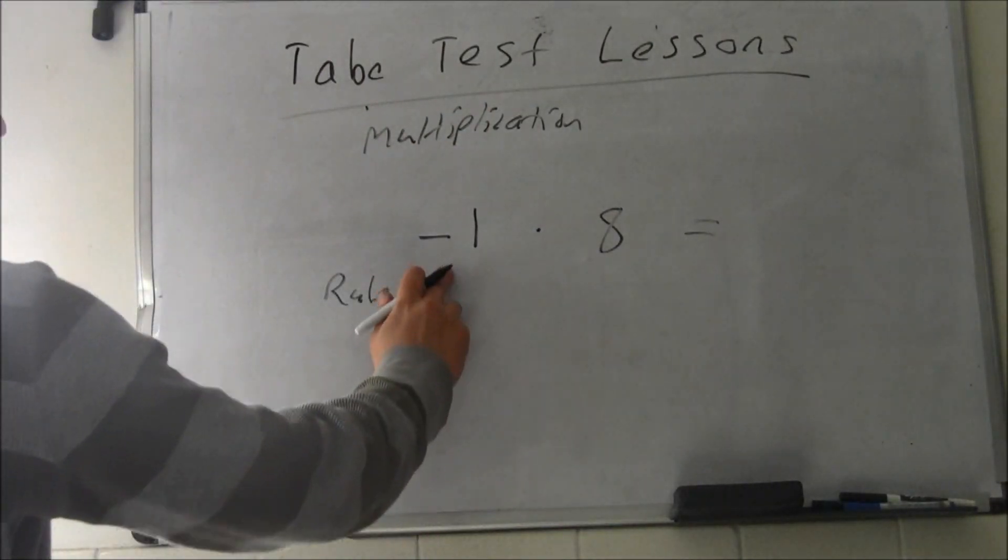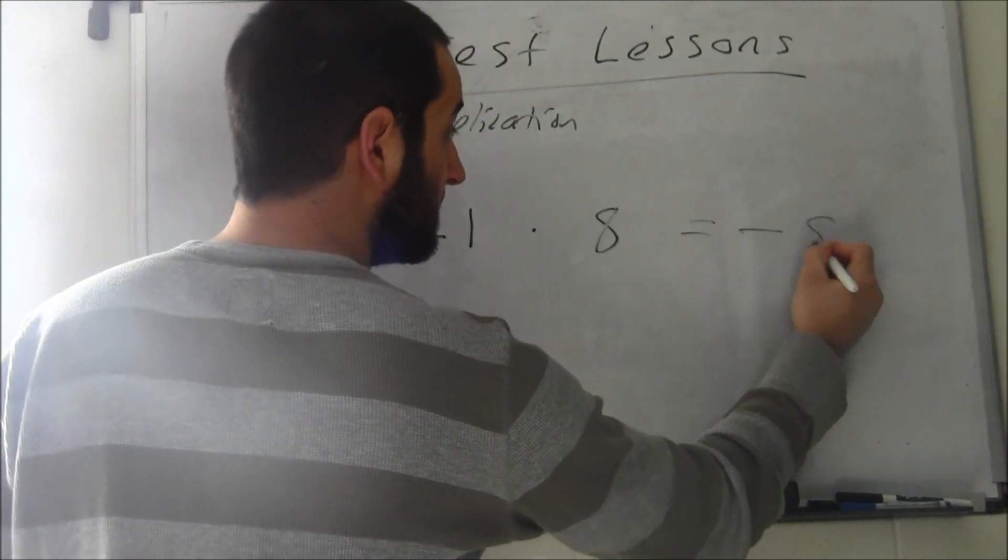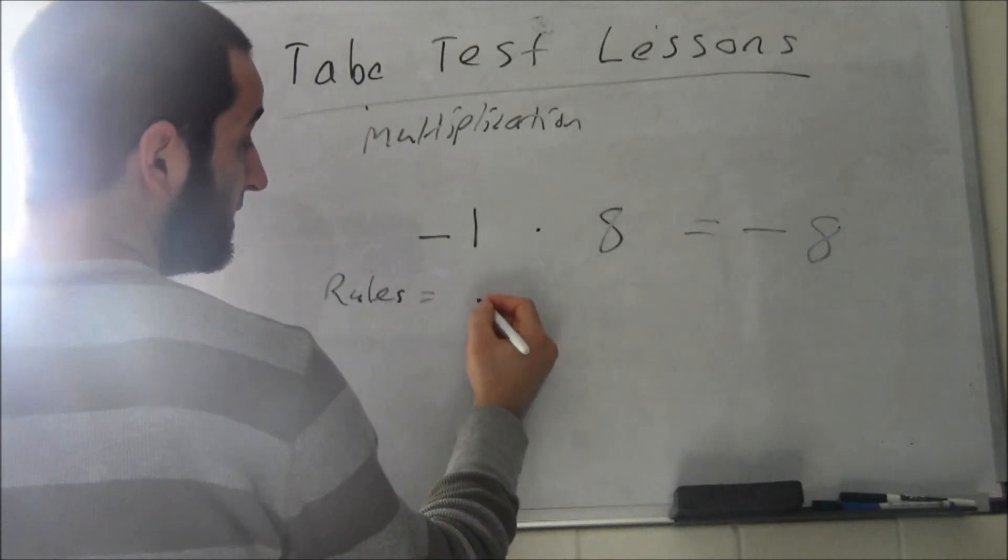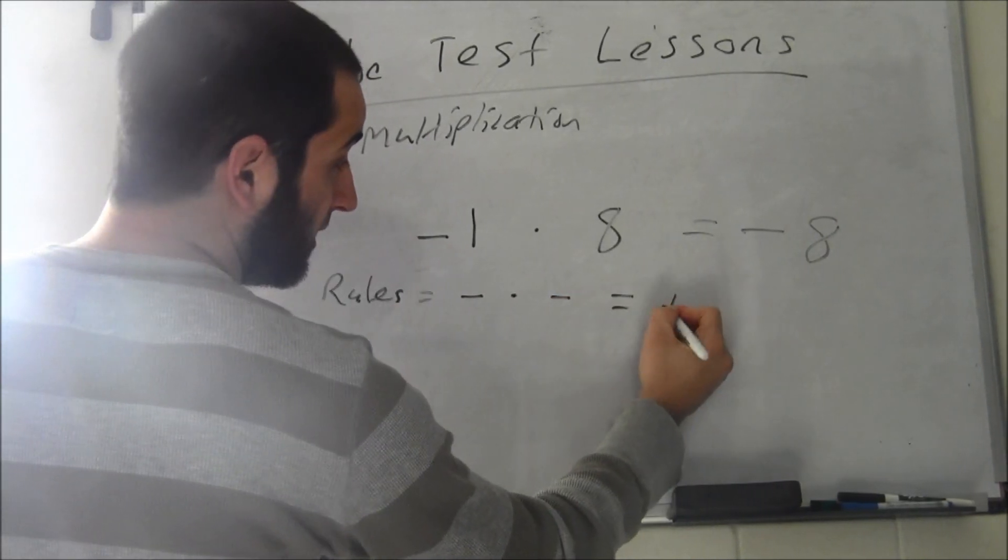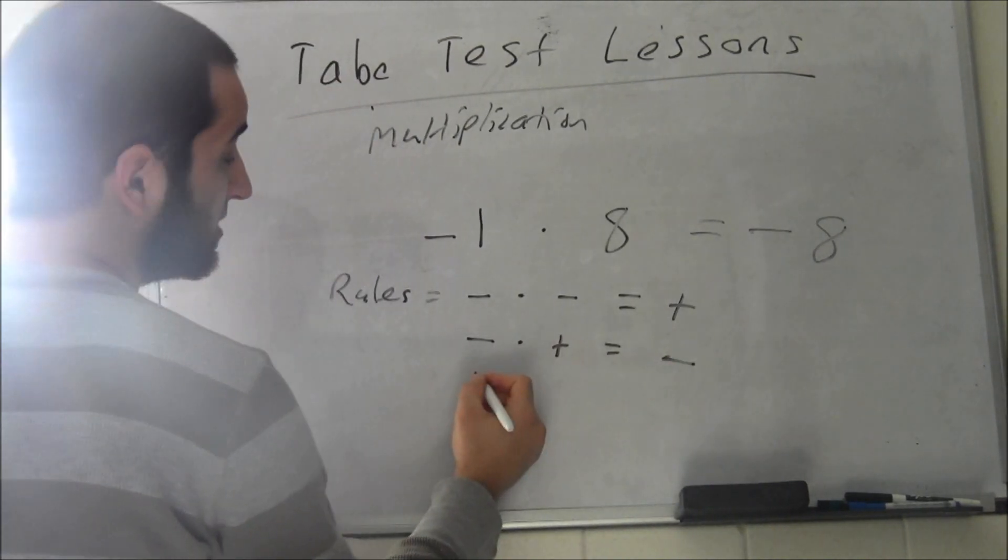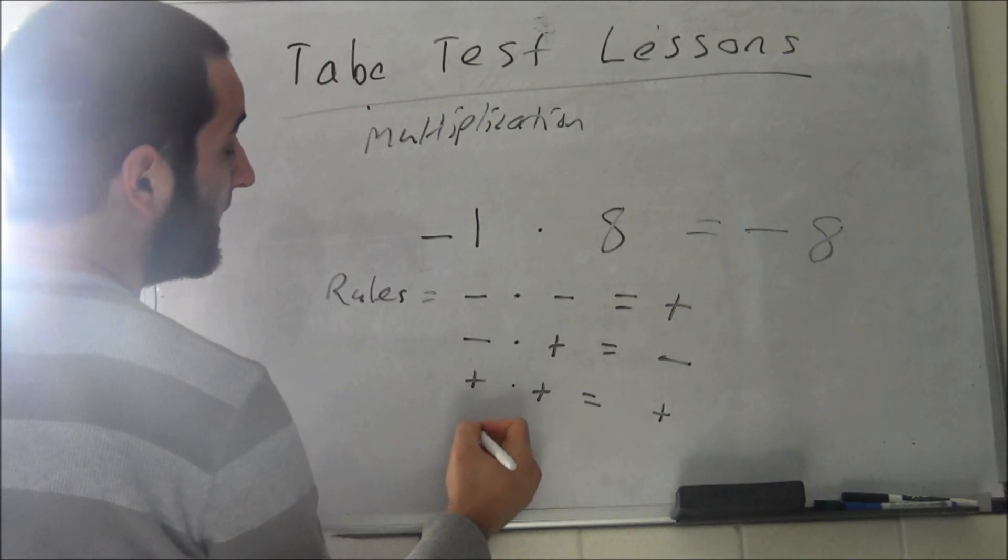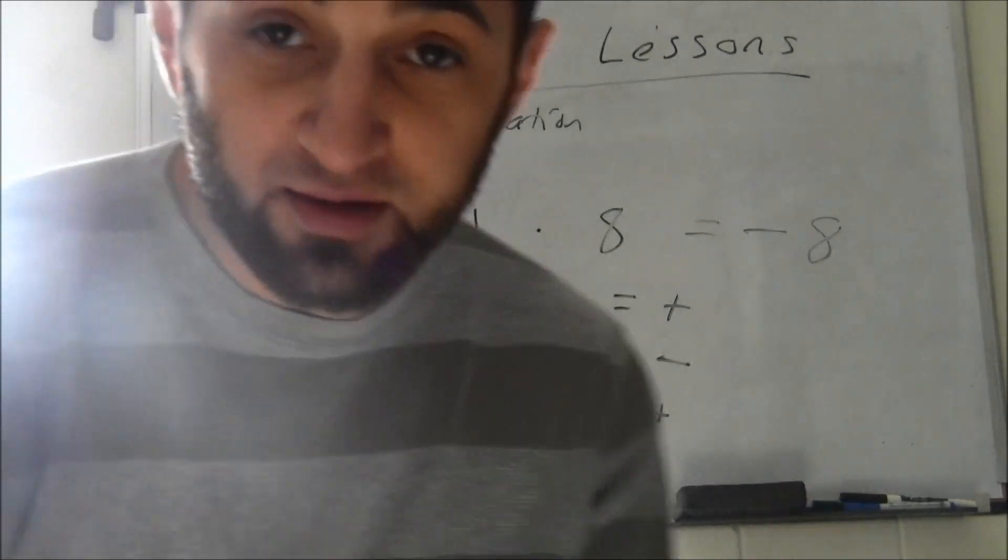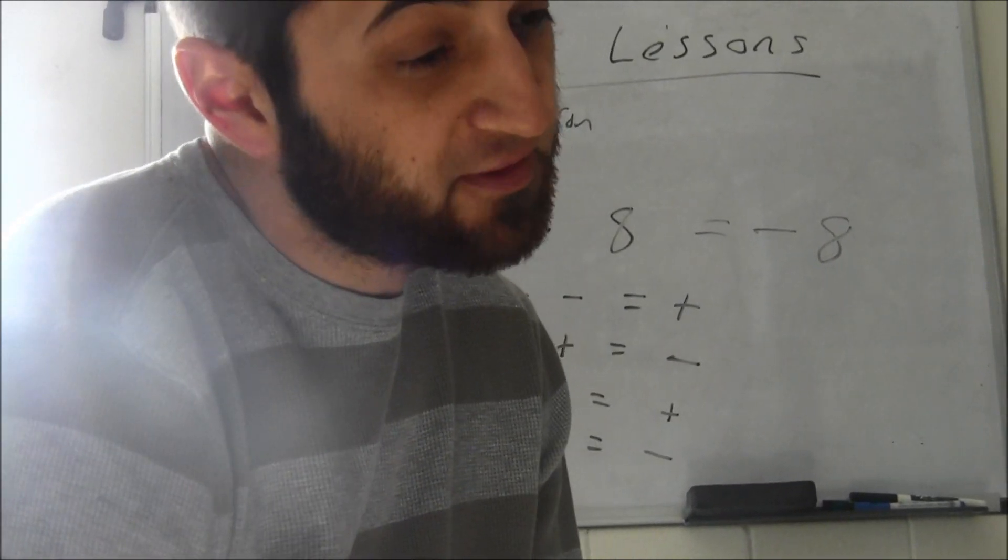Negative one times eight equals negative eight because the rules are as follows: in multiplication, negative times negative is positive, negative times positive is negative, positive times positive is positive, and positive times negative is negative. So if you have different signs it's gonna be negative.